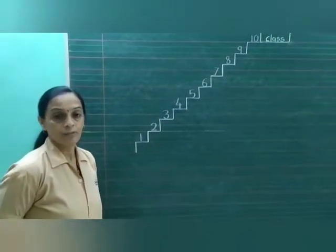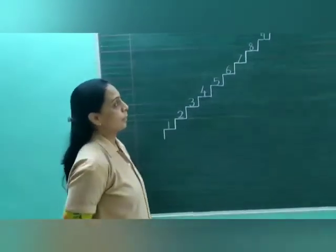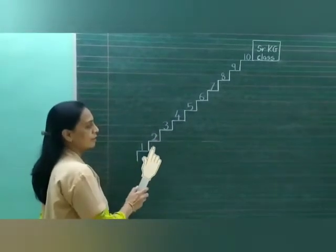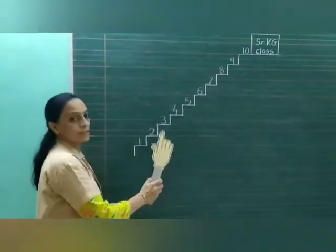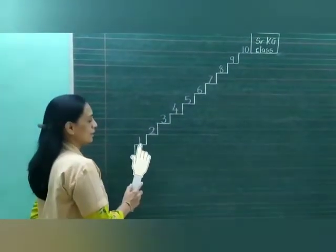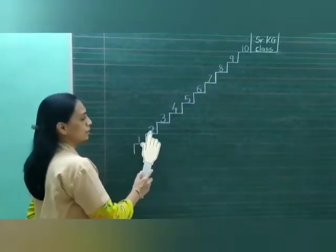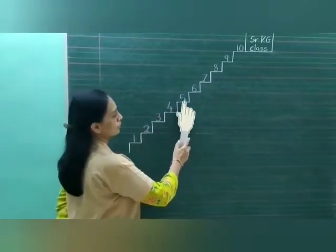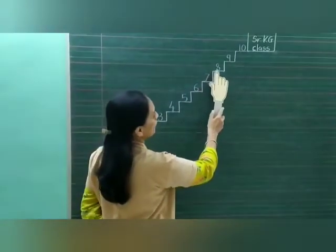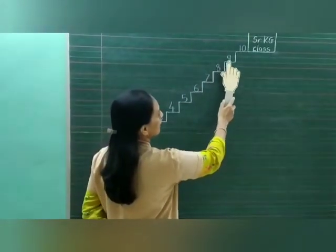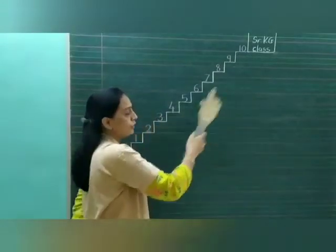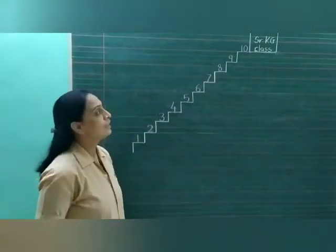So did you understand what we did? When we climb up, we counted the numbers forward — sequentially 1, 2, 3, 4, 5, 6, 7, 8, 9 and 10.